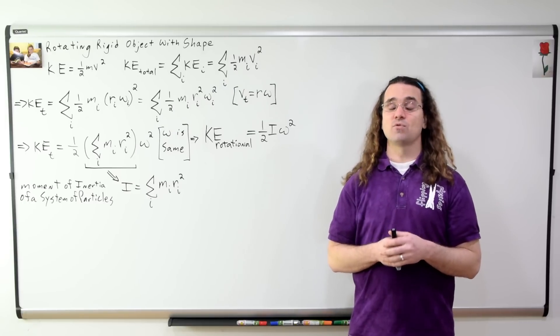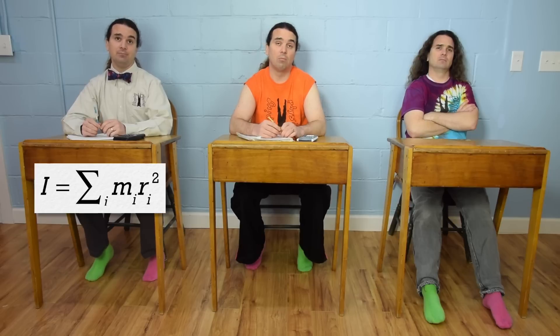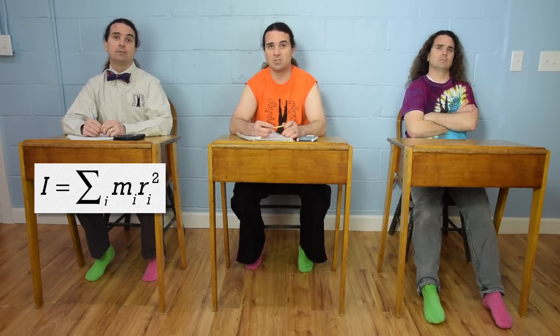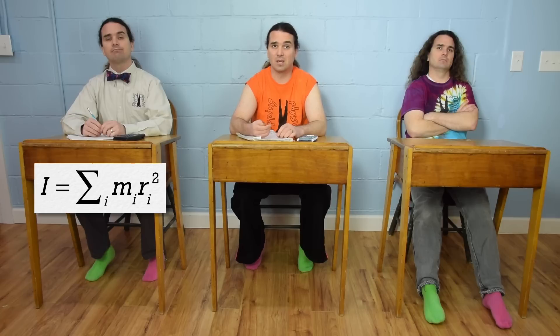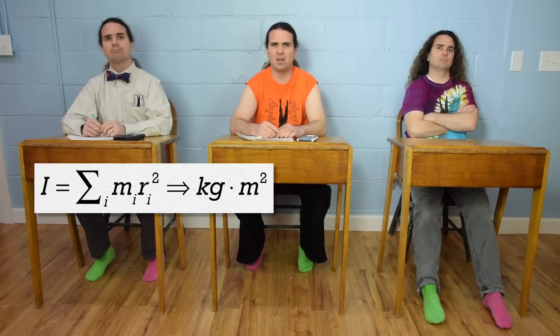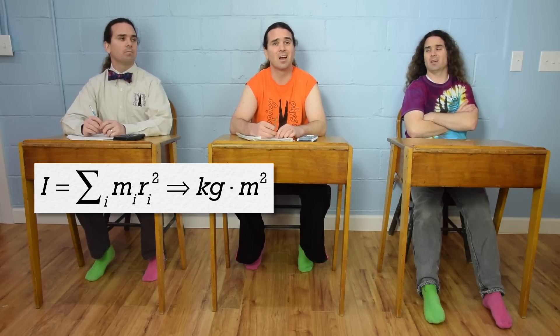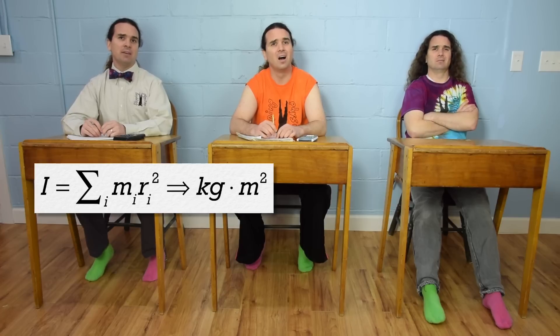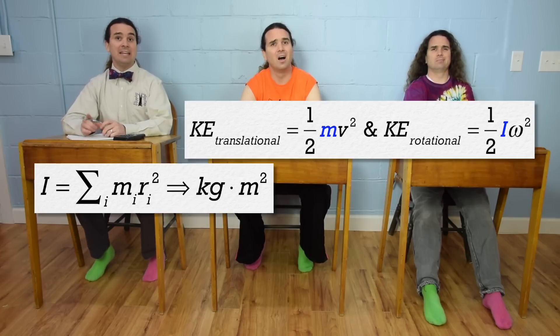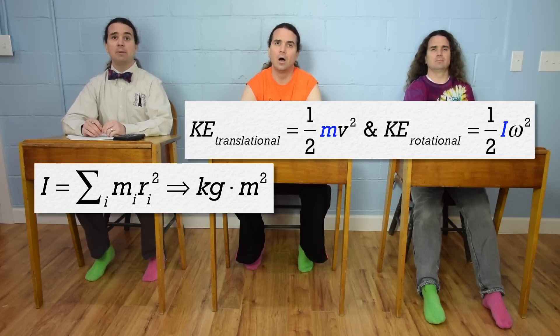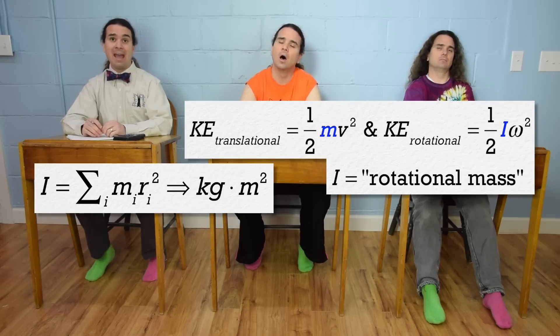Bobby, what are the units for moment of inertia? The moment of inertia equals the sum of mass times distance from the axis of rotation squared, so the units are kilograms times meters squared. That's really strange. If you compare the equations for linear kinetic energy to rotational kinetic energy, you can see why moment of inertia is also sometimes called rotational mass.